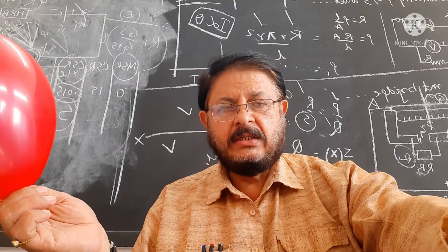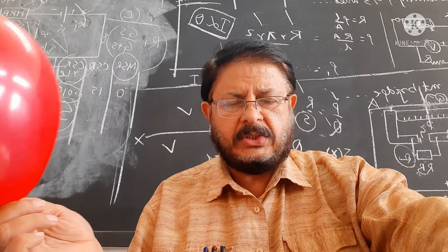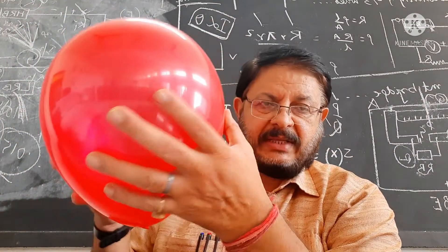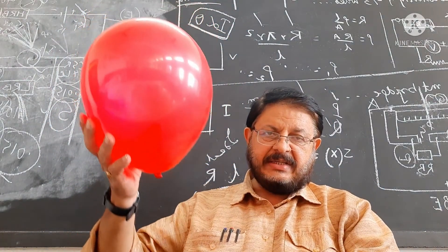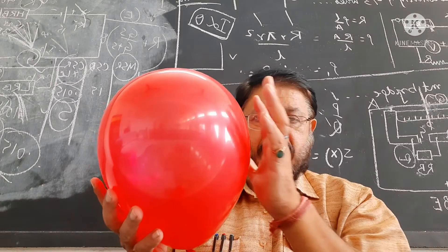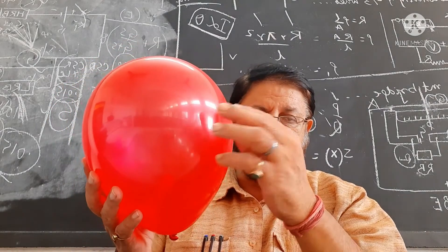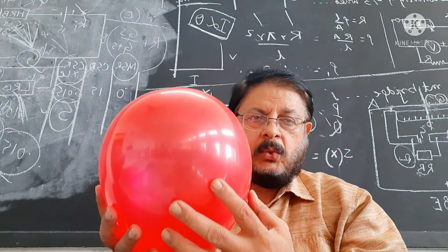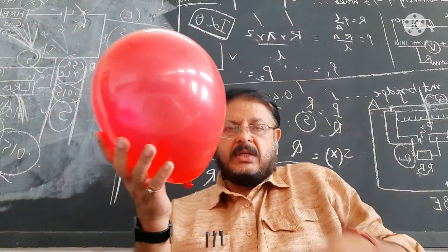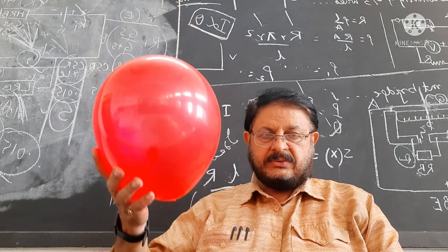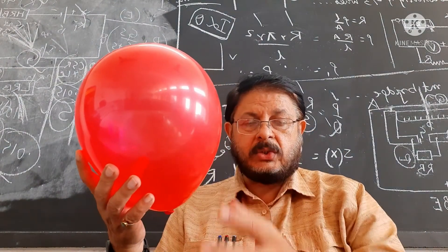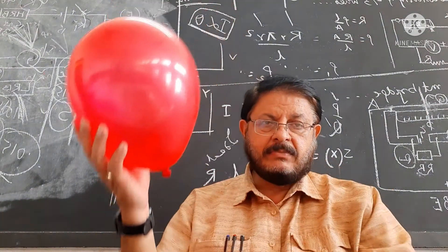Hello students of class 11. Here is one very important question related to the balloon application of Newton's second law of motion. One balloon is descending with an acceleration A, and this balloon's mass is M. We will remove some mass from this balloon so that it will go up. The question is: how much mass do we have to remove from it so that it will go up?